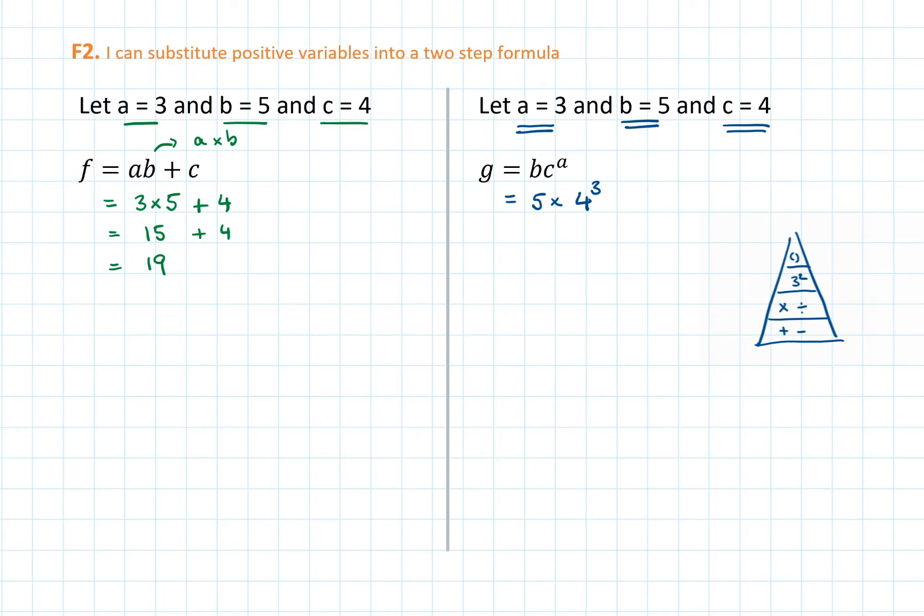5 times 4 to the power 3. First we have to do the power, because of the order of operations. 4 to the power 3 is 64. 5 times 64. And lastly, we have to do the multiplication. 5 times 64 is 320. So the value of the variable g is 320 in this case.